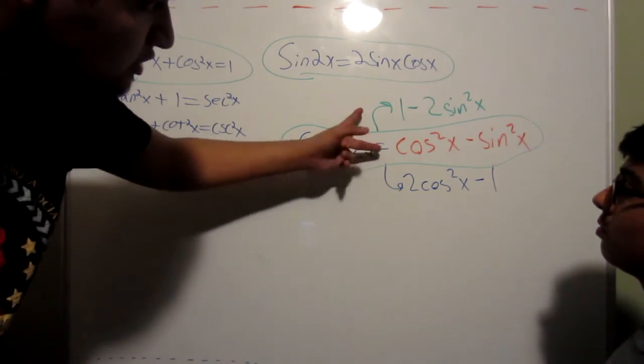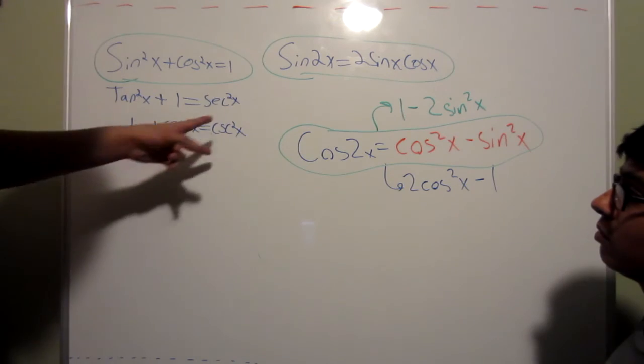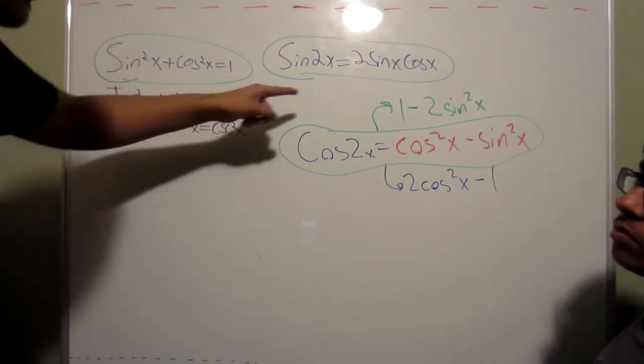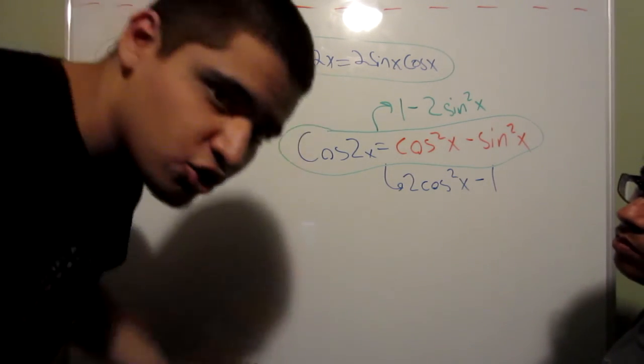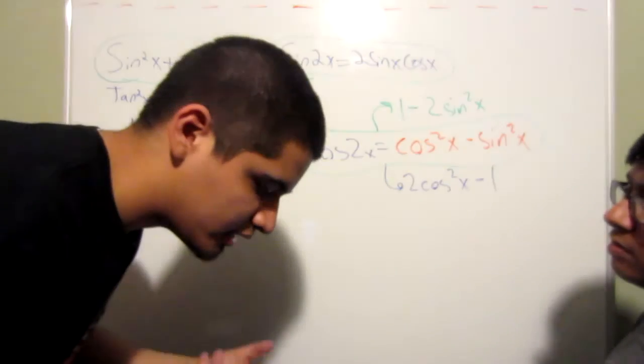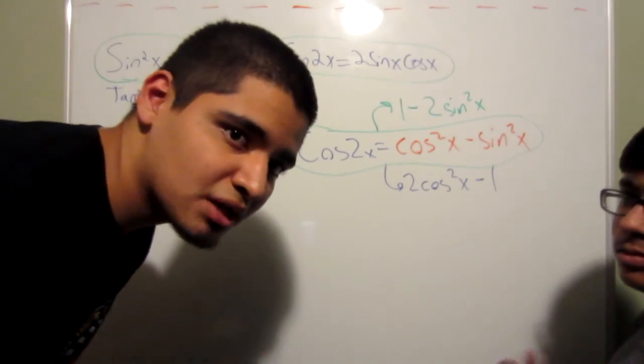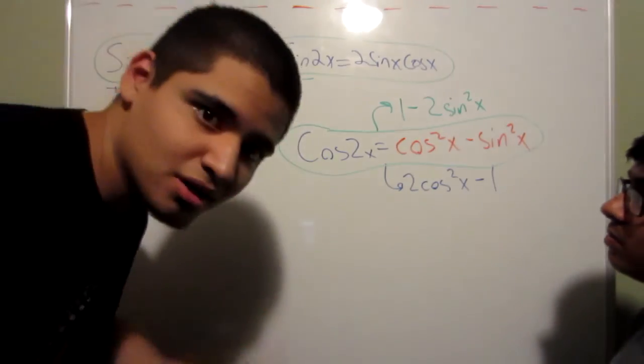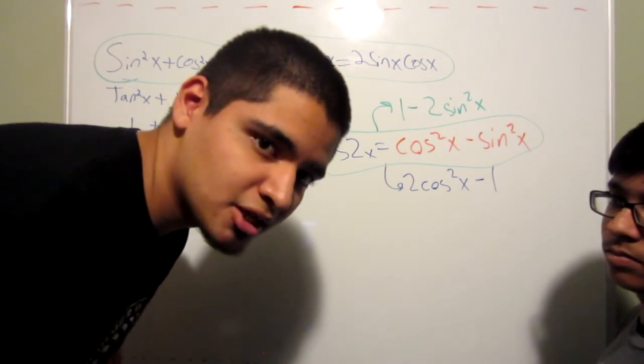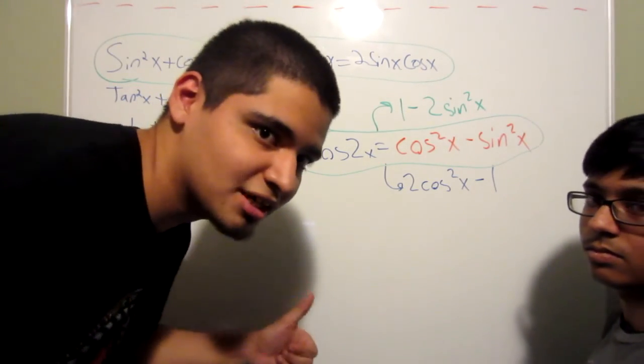And know how to get these two from this one, and know how to get these two from this one, and you just have to know this one, you'll be able to keep remembering the identities without having to memorize each of them separately. So, that is it for this video. Thanks for watching. See you in the next one.